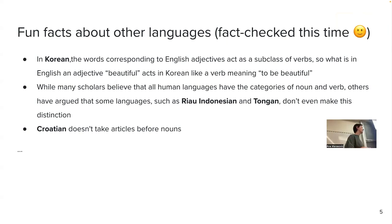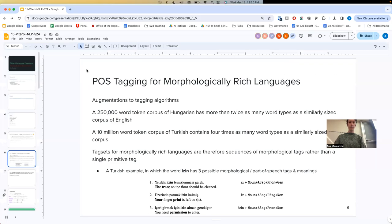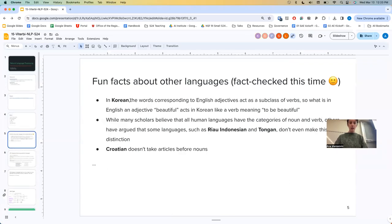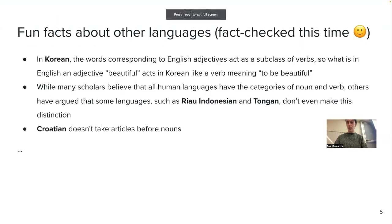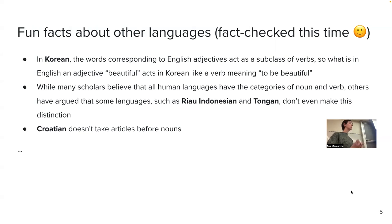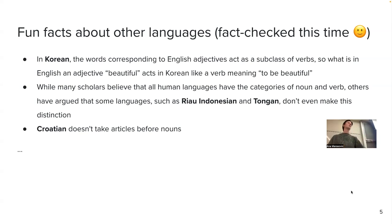I want to clarify a few things from last time. I was saying something like 'Korean doesn't have adjectives.' More formally: in Korean, words corresponding to English adjectives act as subclasses of verbs. So what is an English adjective — say, 'beautiful' — in Korean would be a verb meaning 'to be beautiful.' These differences in how grammatical roles are used across languages are going to be different.